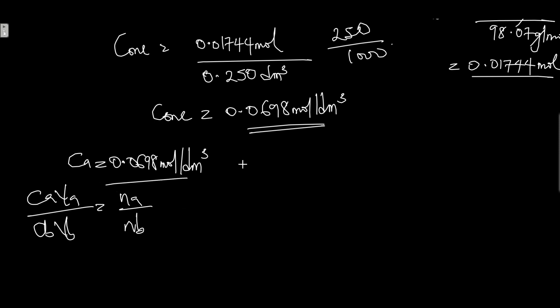The concentration of the acid CA is 0.0698, the average volume of acid is 20.25 cm³. The concentration of the base is what we're looking for. The volume of the base, which is the size of the pipette, is 25 cm³.